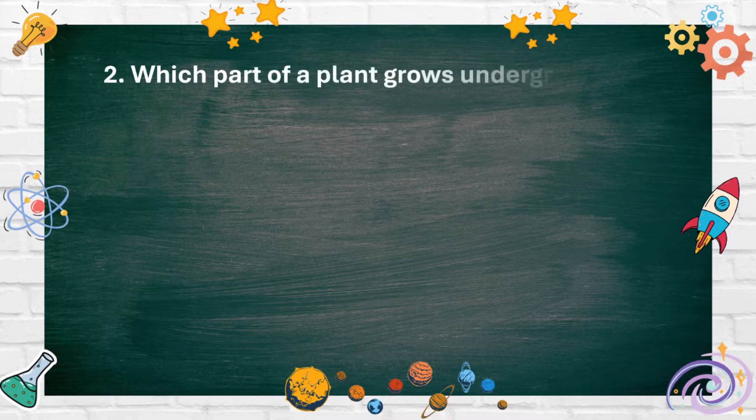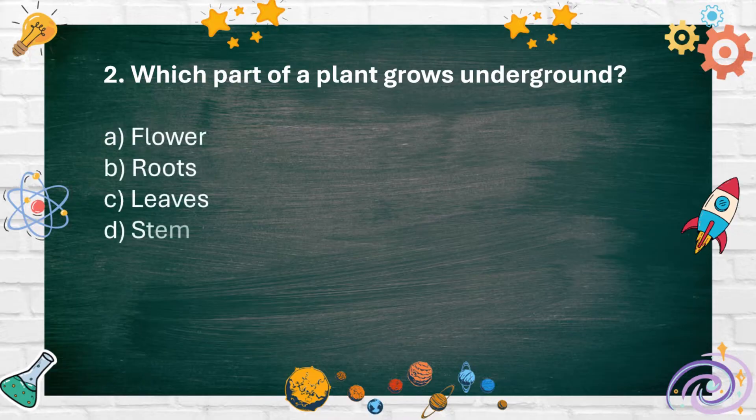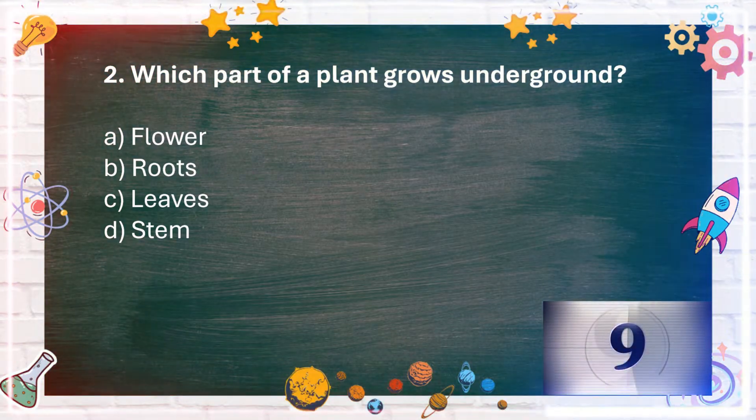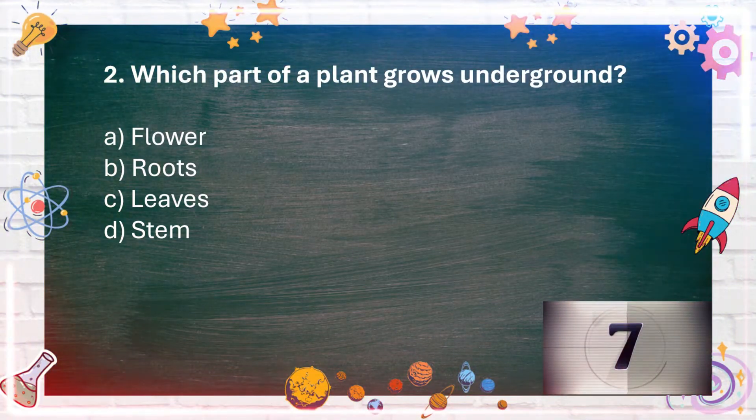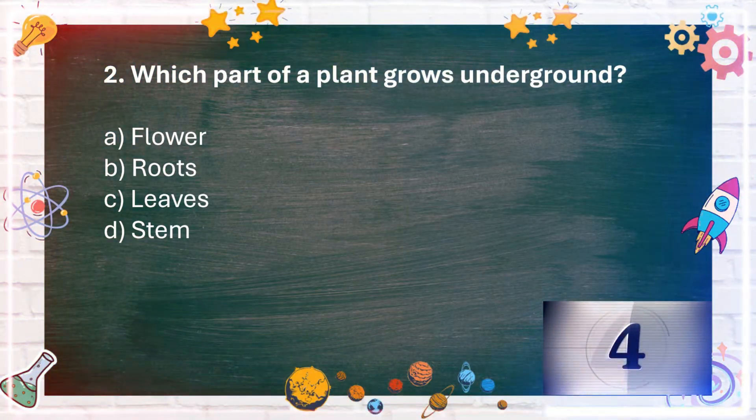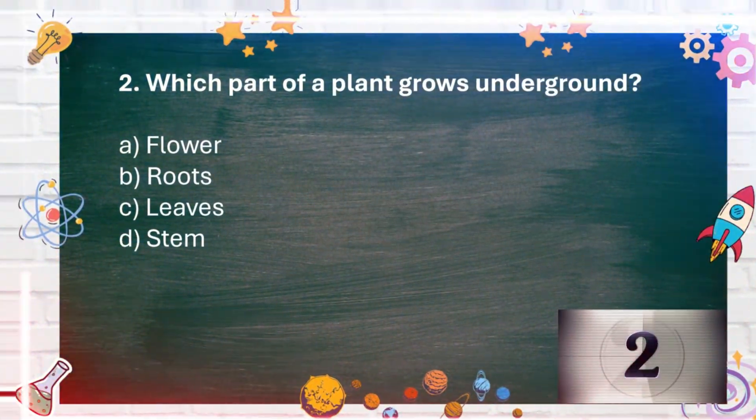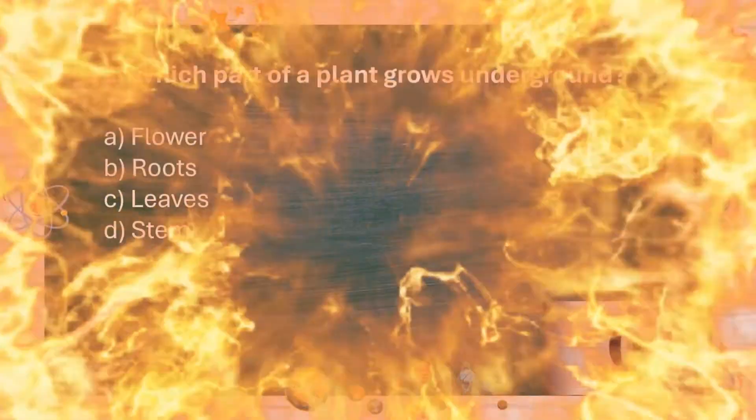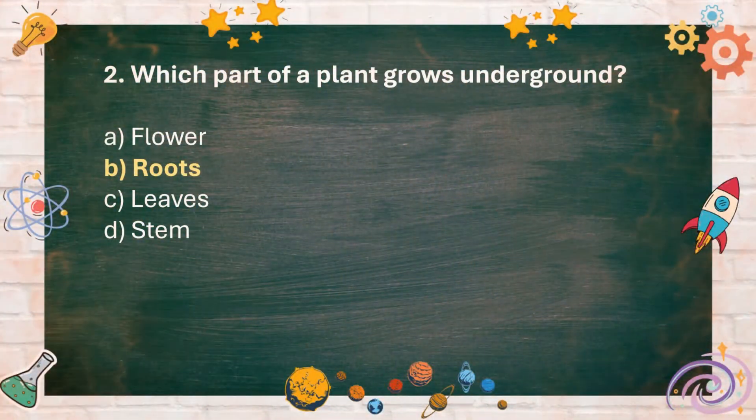Number 2. Which part of a plant grows underground? A. Flower B. Roots C. Leaves D. Stem. The answer is B. Roots.